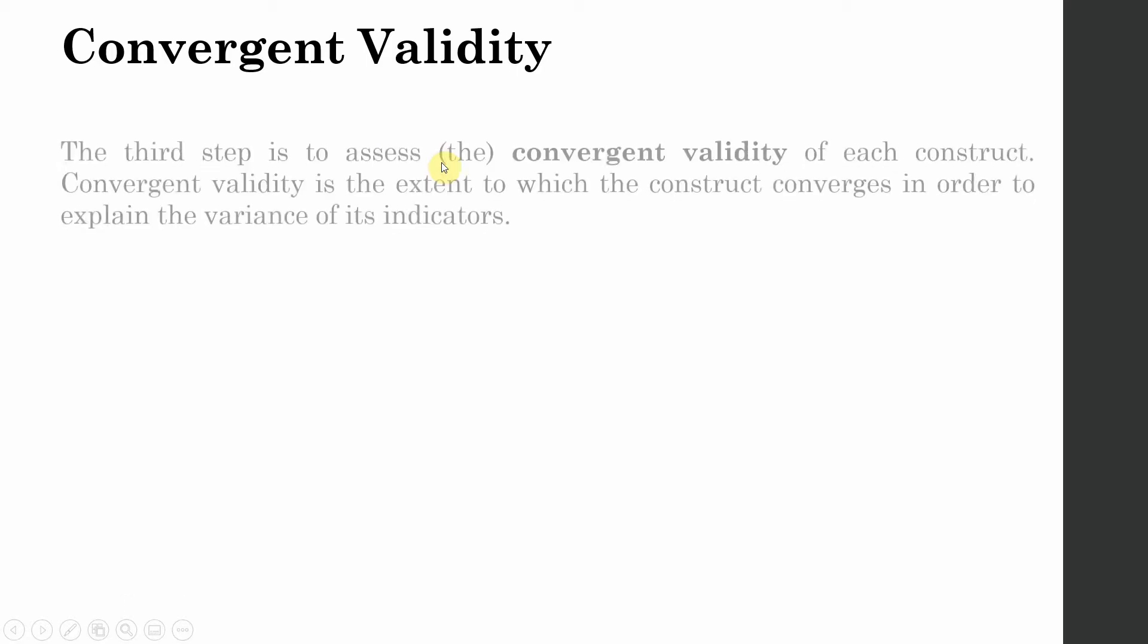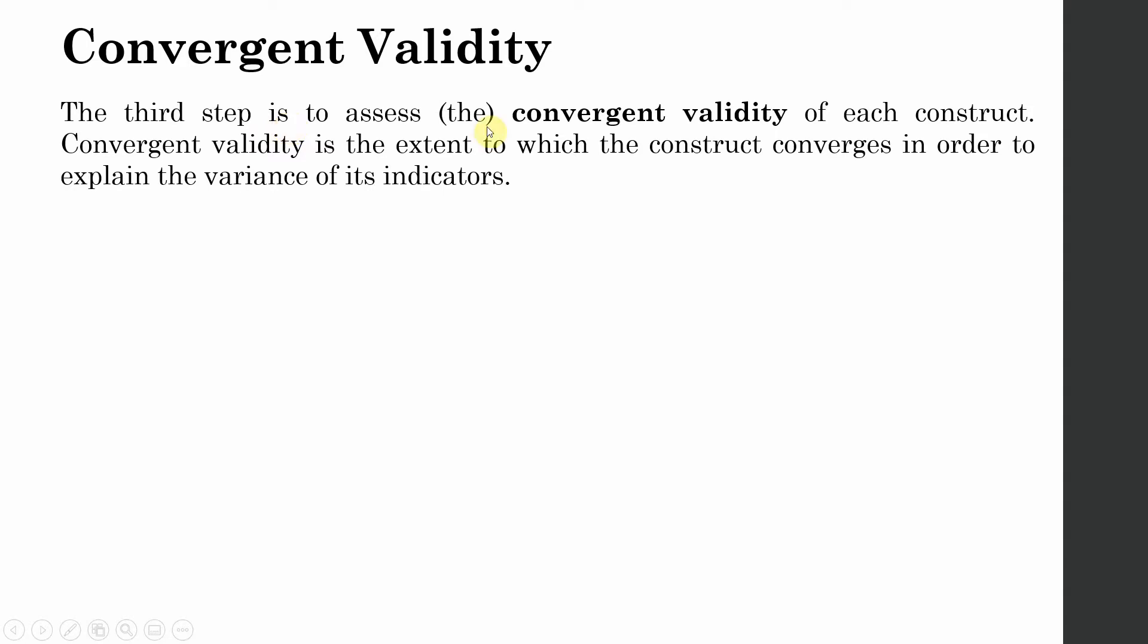Convergent validity: whether or not all the items that are measuring a particular construct converge to represent the underlying construct. This is the third step, that is, convergent validity of each construct.